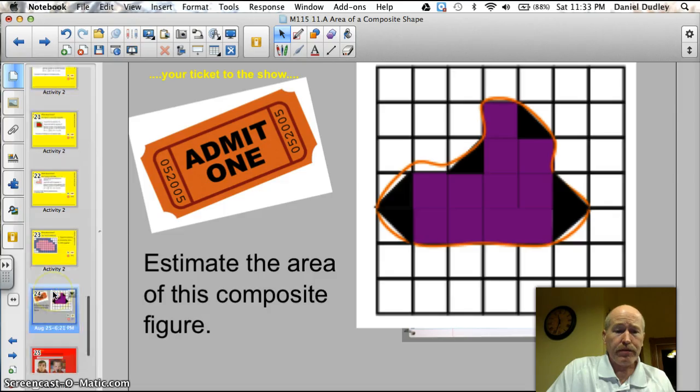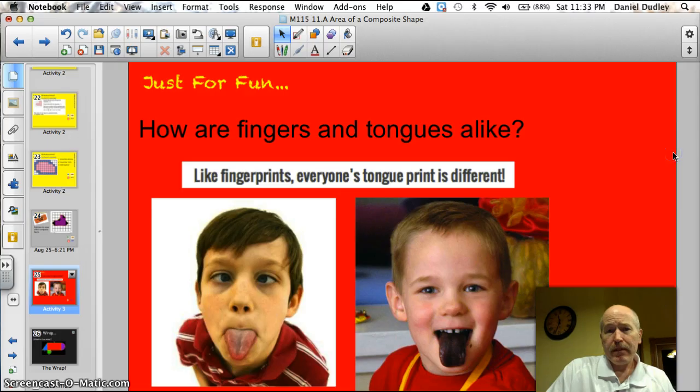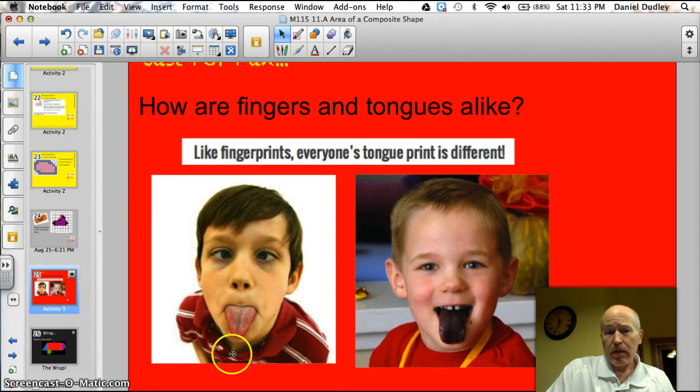Tonight's trivia question. How are fingers and tongues alike? Everyone's fingerprints are different and everyone's tongue prints are different. This kid, he's clean. He hasn't been tongue printed. This kid must be a crook. Look at that. They've already tried to tongue print him at the police station. Ha! It's a bad joke, but it's late at night, folks.